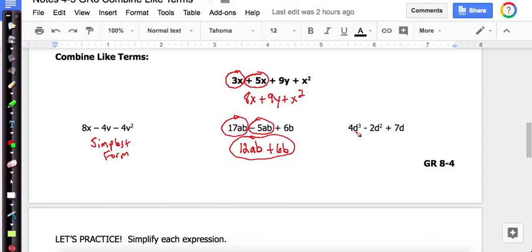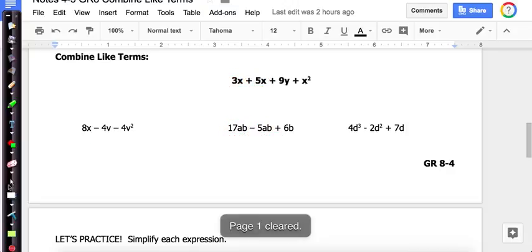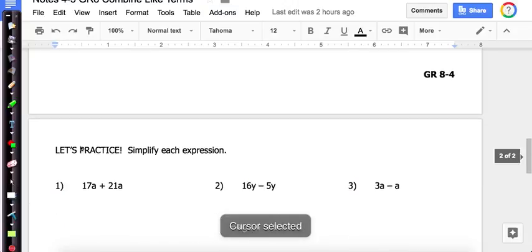Okay. Now look here. We have d to the third power. Any other d to the third powers? No. We have d squared. Any other d squareds? No. We have just d. Any just plain old d's? Nope. So this is already in simplest form. So write simplest form. Okay. Let's practice down below. So turn the page.